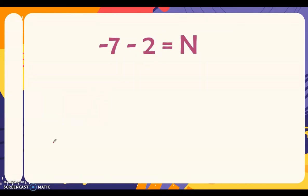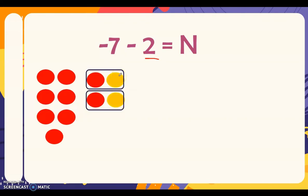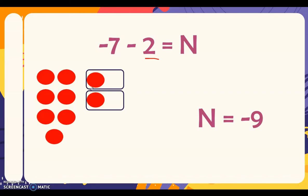Next: negative 7 minus 2 is equal to n. We represent negative 7 as 7 red chips. We need to subtract 2 yellow chips, but we don't have any yellow chips. So we add 2 zero pairs to form 2 yellow chips. We remove those 2 yellow chips and count the remaining chips — 9 red chips. Therefore, negative 7 minus 2 is equal to negative 9.